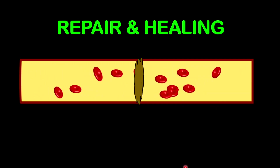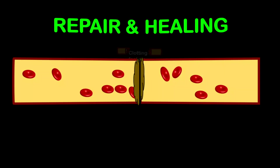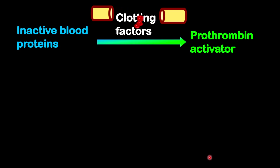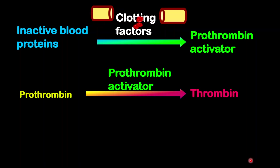Now let's look at the blood clotting process in a more flow chart sense. Inside your blood there are some clotting factors, and these clotting factors are actually proteins. The clotting factors will cause the inactive blood proteins to form into prothrombin activator. Prothrombin activator will then be responsible for converting prothrombin into thrombin.